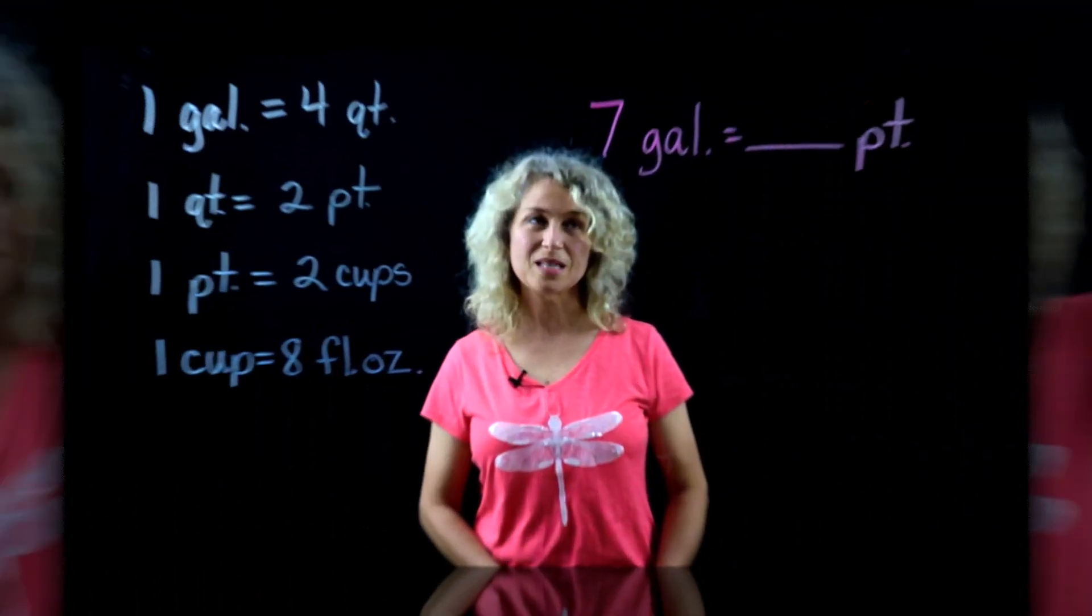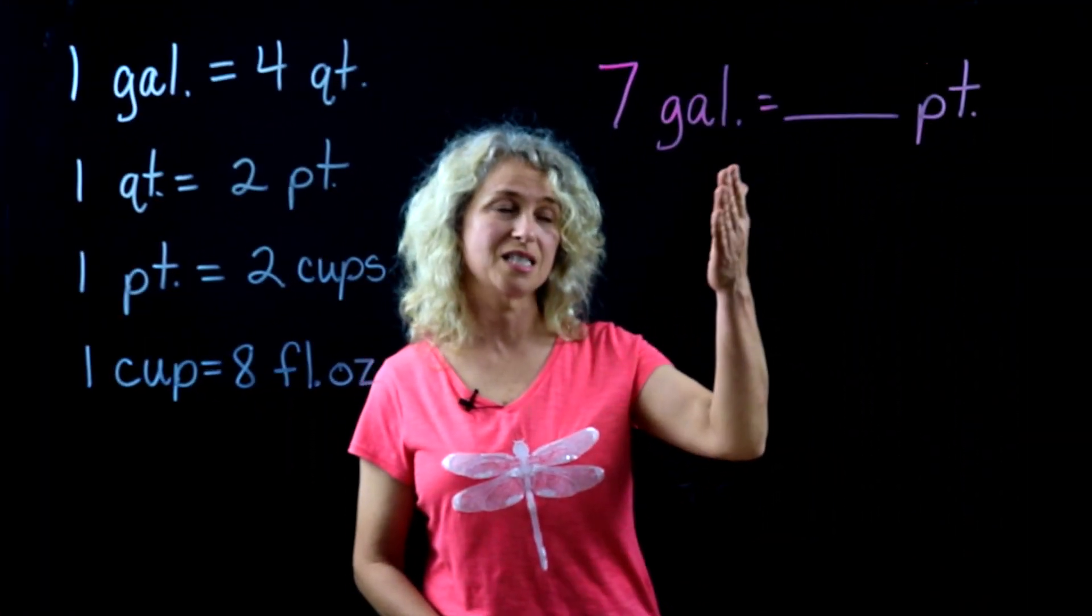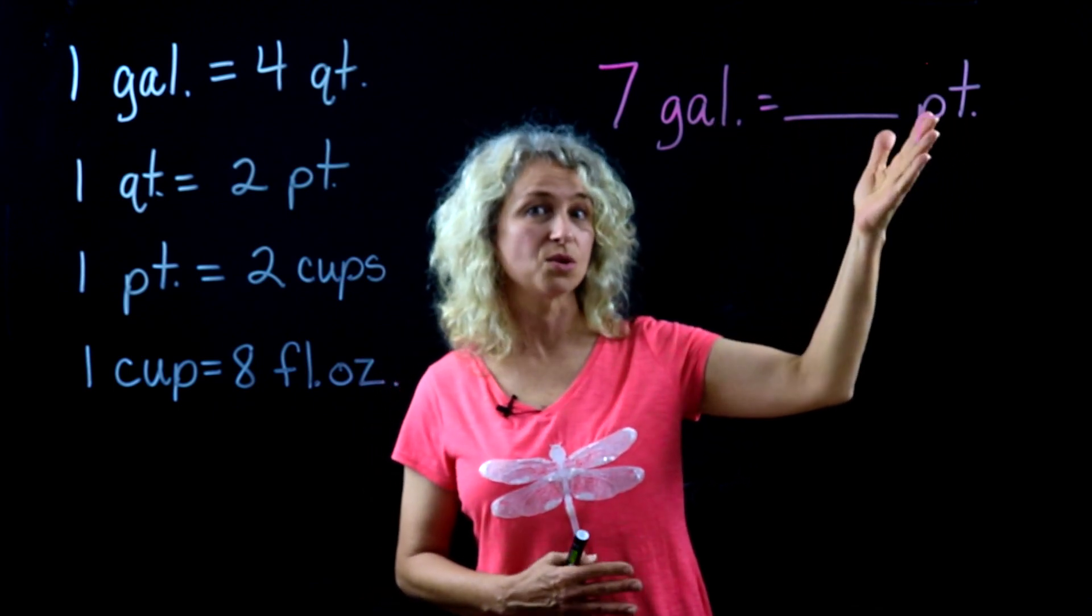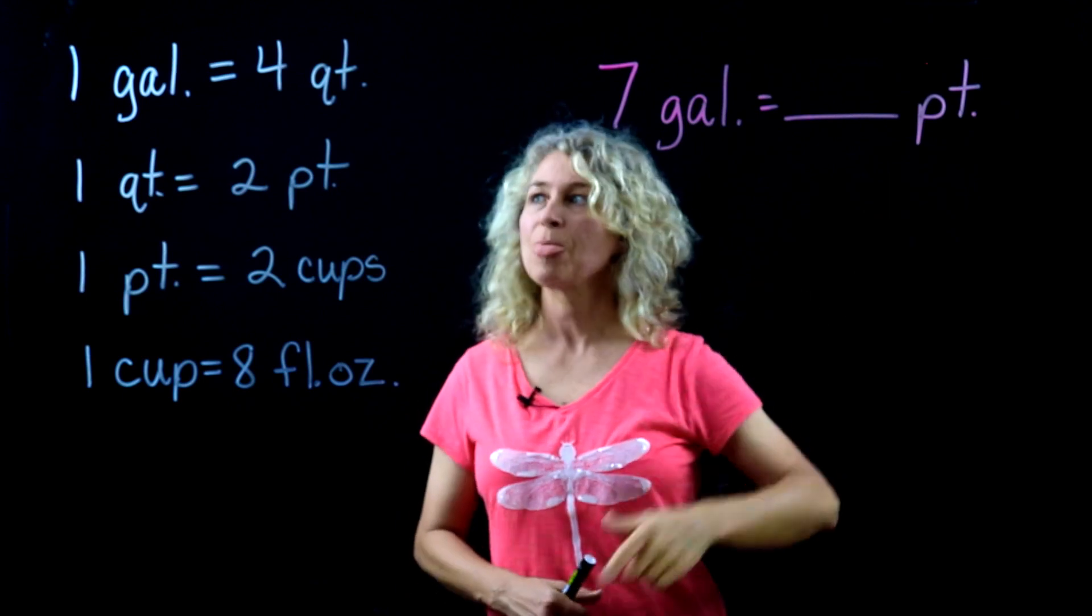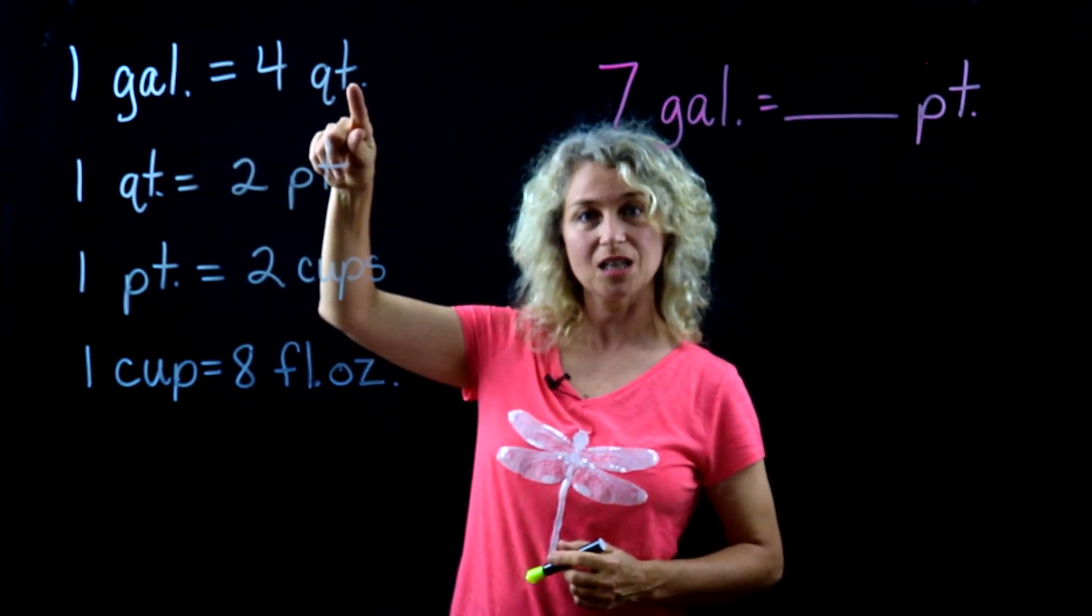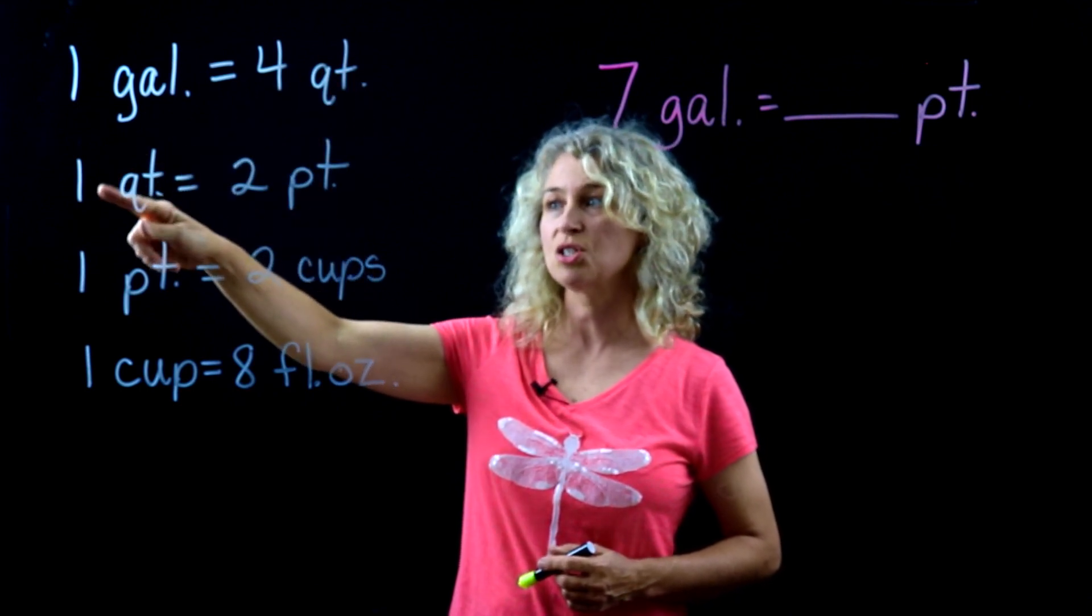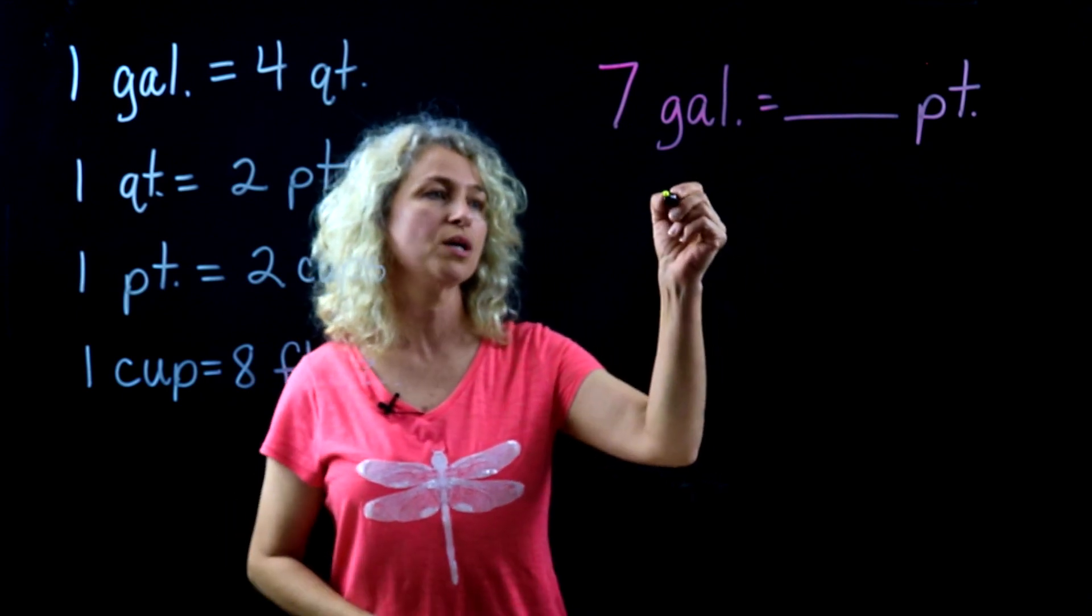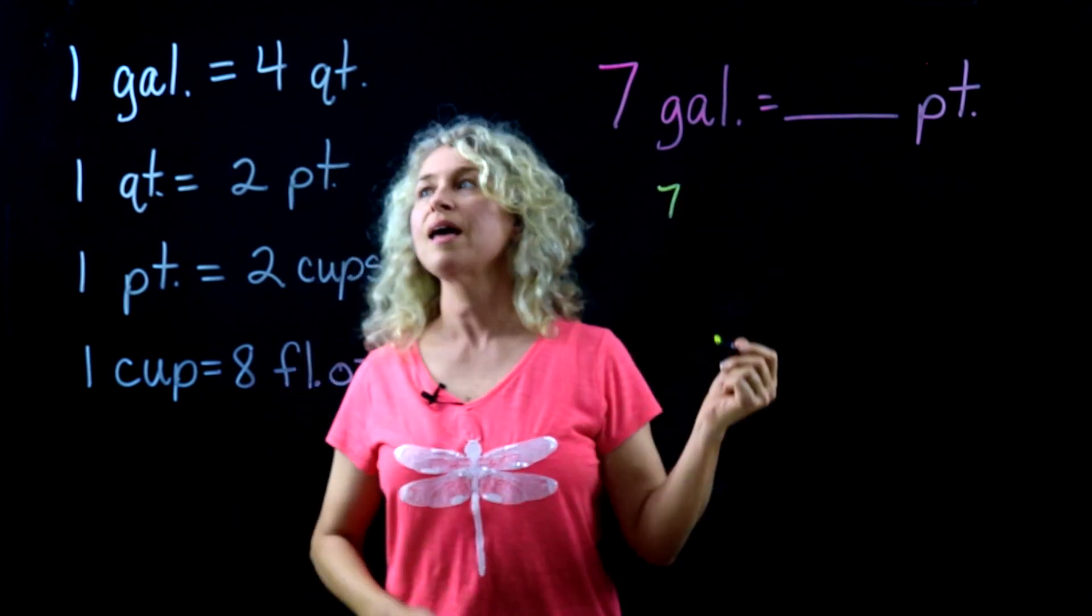So suppose we have seven gallons and we want to convert that to pints. Larger to smaller, we know we're going to multiply. So gallons—you first have to convert those to quarts, and then we'll change the quarts to pints. This is going to be two steps.